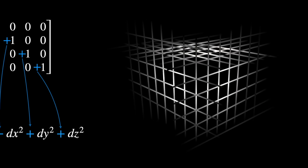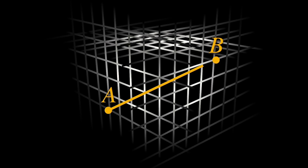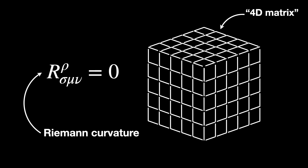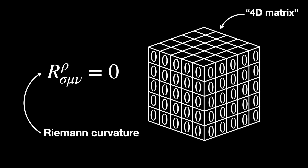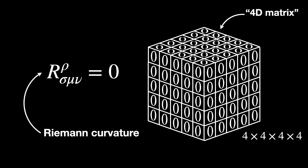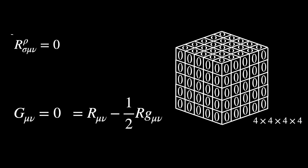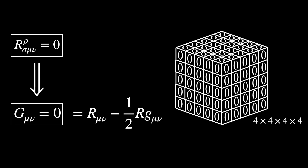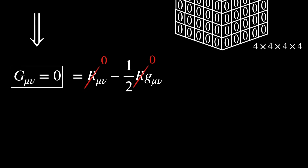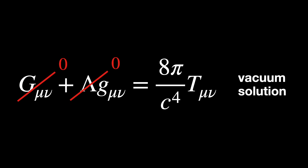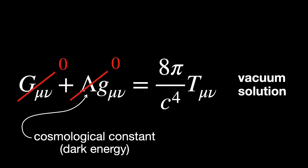The line element tells us how spacetime itself measures intervals between nearby events. This metric is flat, meaning that all components of the Riemann curvature tensor vanish, which implies that the Einstein tensor is also zero everywhere. This is a vacuum solution of Einstein's equations with lambda equals zero, so the cosmological constant responsible for dark energy is set to zero.